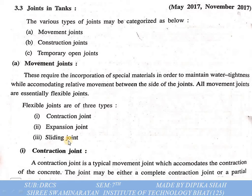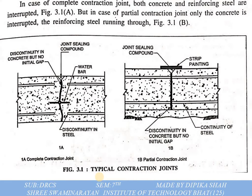What is a contraction joint? A contraction joint is a typical movement joint which accommodates the contraction of concrete. The joint may be either a complete contraction joint or a partial contraction joint. We provide contraction joints to relieve the contraction that occurs in winter season — contraction in winter and expansion in summer.